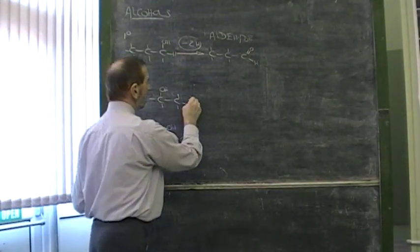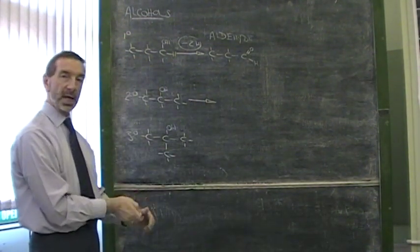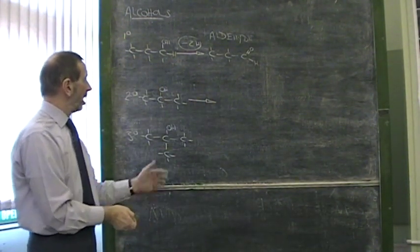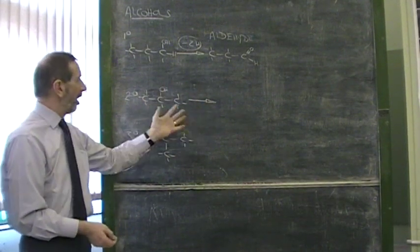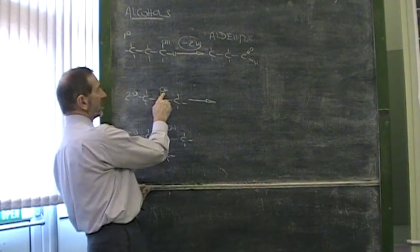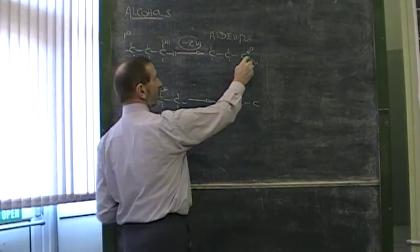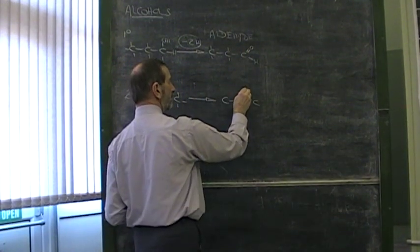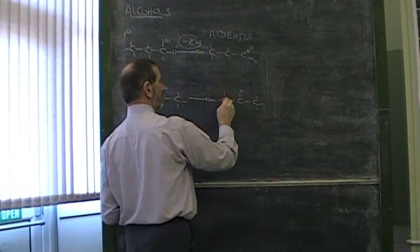When we do exactly the same thing to a secondary alcohol using the same oxidizing agents, we find the same color change. The purple one goes colorless, the orange one goes green. This has been oxidized, but there's an important difference. Because the hydroxyl group is on the middle carbon atom, that's where the action is taking place. It's not an aldehyde, it's a ketone.